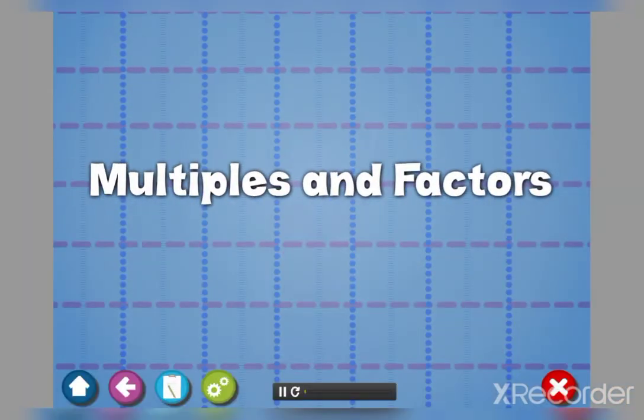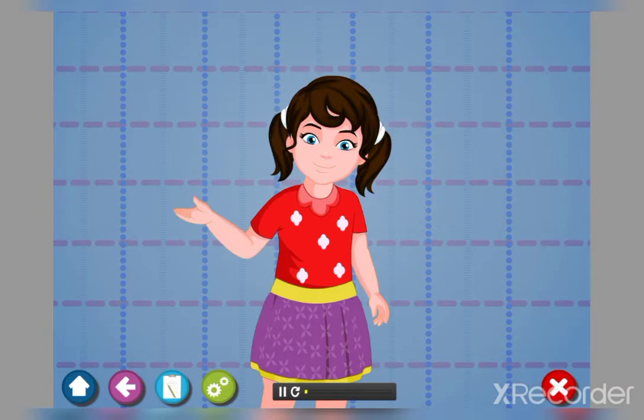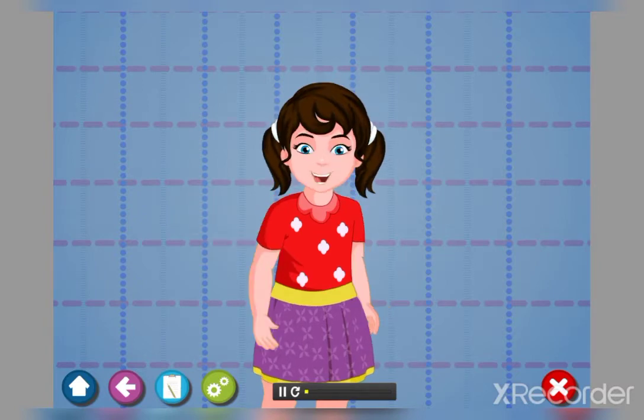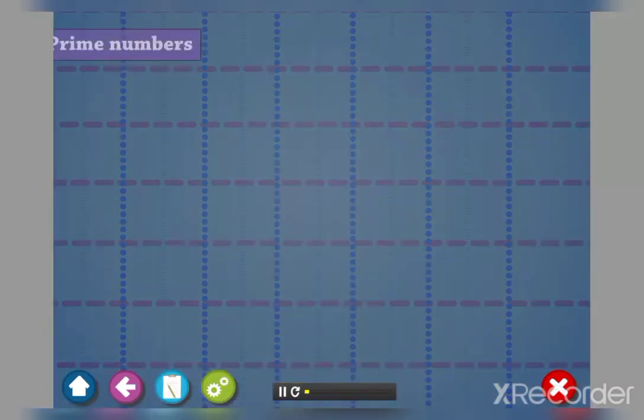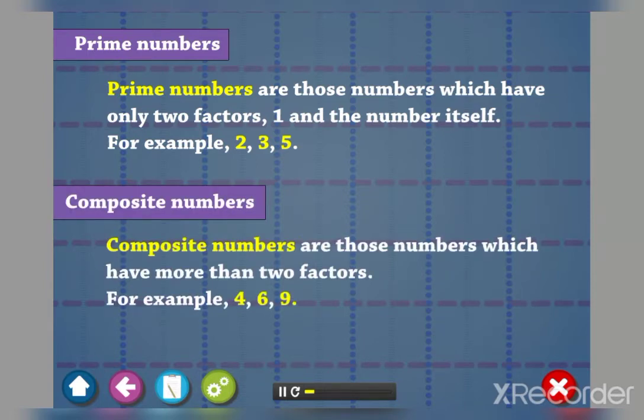Multiples and factors. Children, in the last class we have learned about simple concepts of multiples and factors. Prime numbers are those numbers which have only two factors: one and the number itself. Composite numbers are those numbers which have more than two factors.